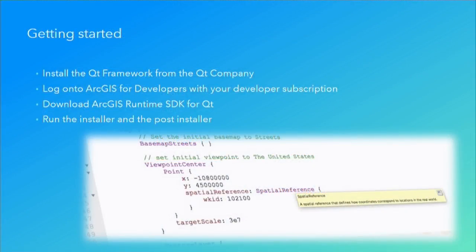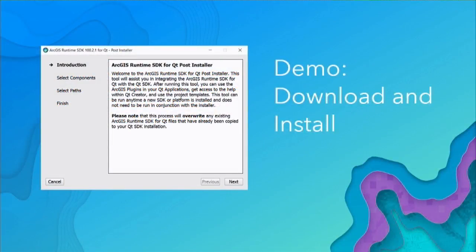How do you get started? First, install the Qt framework from the Qt company. Then log on to the ArcGIS for Developers website with your developer subscription. Download and run the installer for the ArcGIS Runtime SDK for Qt. Once that's complete, run a post-installer that helps integrate our SDK with the Qt framework.